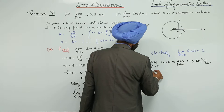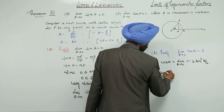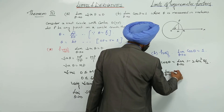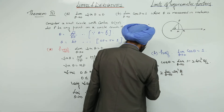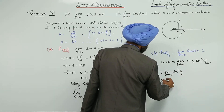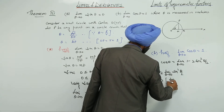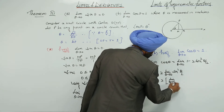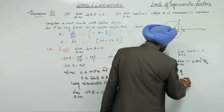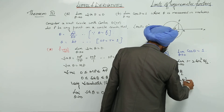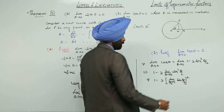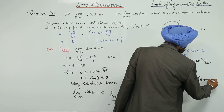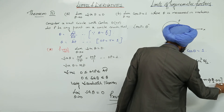We can write this as 1 minus 2 times limit theta approaches 0, sin squared (theta over 2). Substituting, this becomes 1 minus 2 times limit (theta over 2) approaches 0, sin squared (theta over 2). When theta approaches 0, this implies theta over 2 also approaches 0.